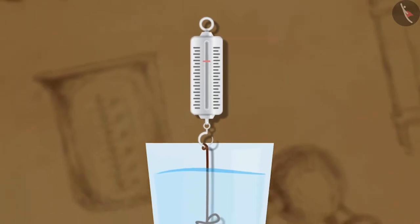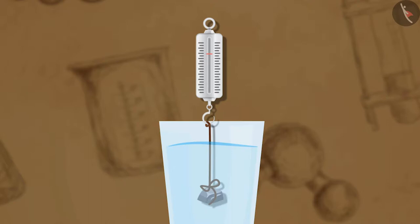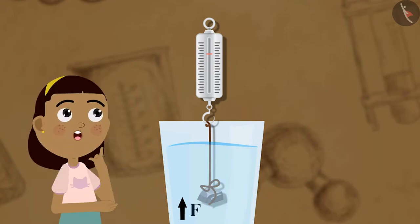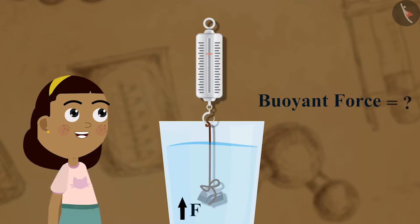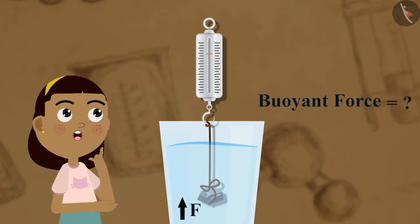You will notice that there is a decrease in the reading, which means that there is a decrease in the weight of the stone. It is because there is an upward force acting on the stone. We know that this upward force is the buoyant force. But what is the magnitude of the buoyant force acting on any substance? The answer to this question was found by a Greek scientist named Archimedes.